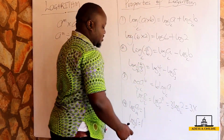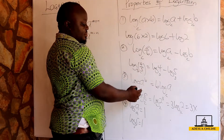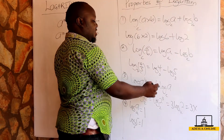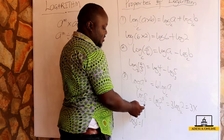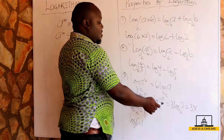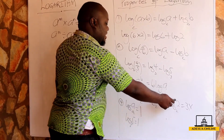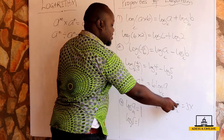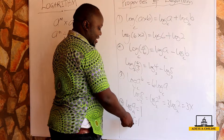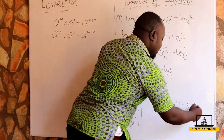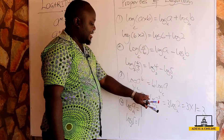Continuing with the third law example: log eight to the base two, written as log two to the power three to the base two, is in the form where the index comes down to multiply, giving us three times log two to the base two. Now log two to the base two gives us one, because the log of a number to the same base is one. So this gives us three times one, which equals three. This confirms that two raised to the power three gives us eight.